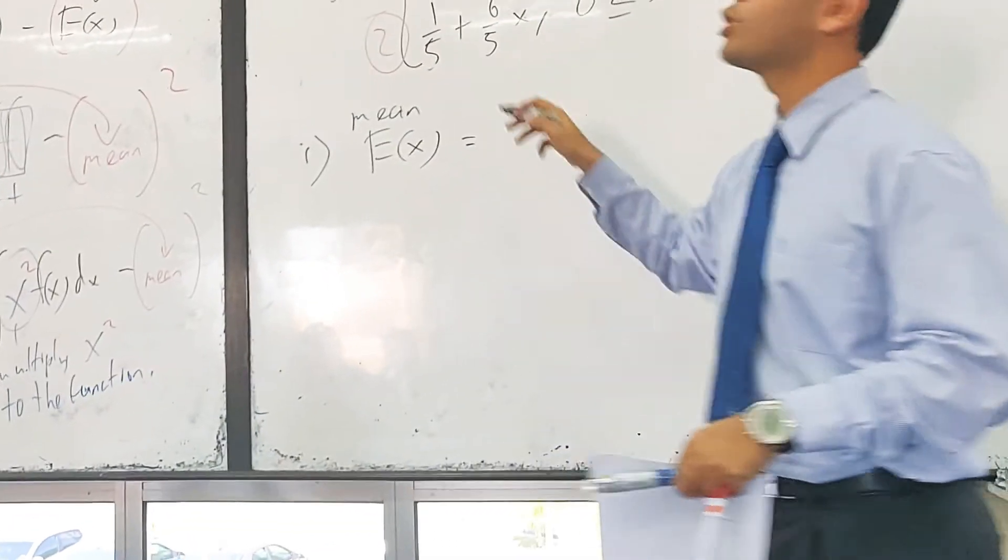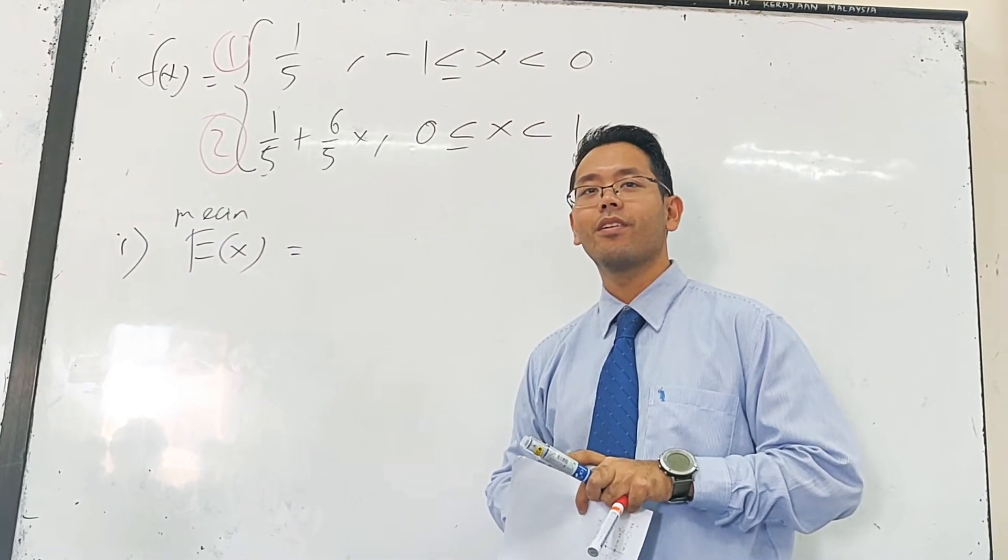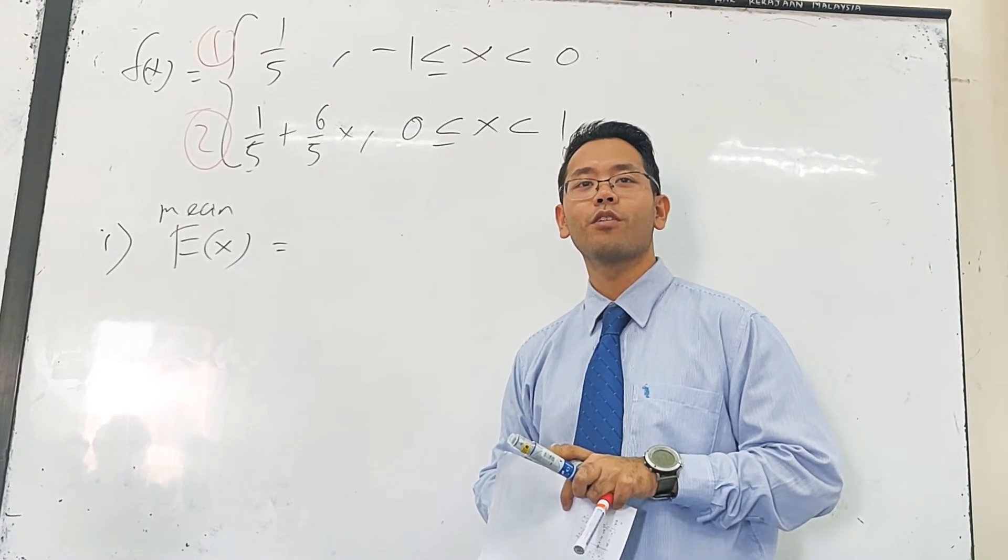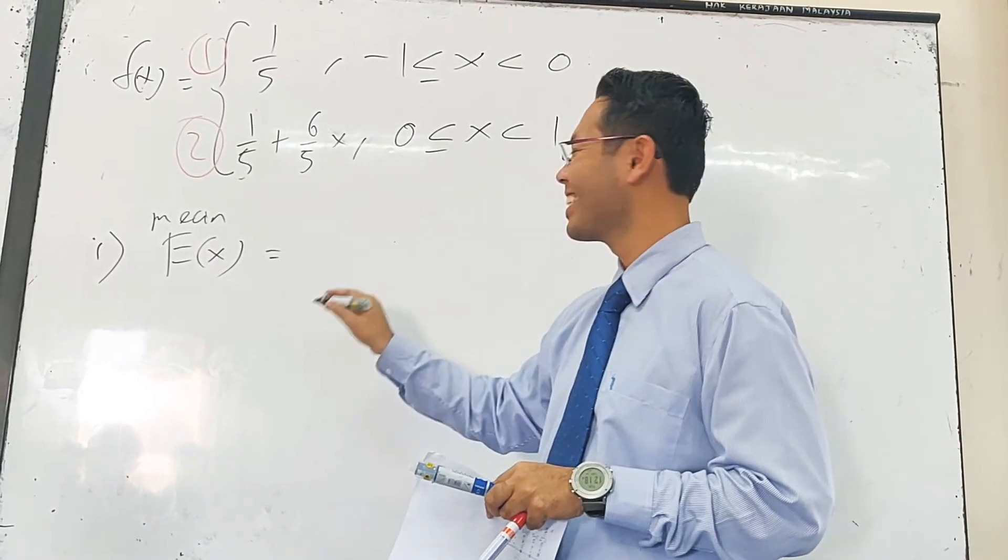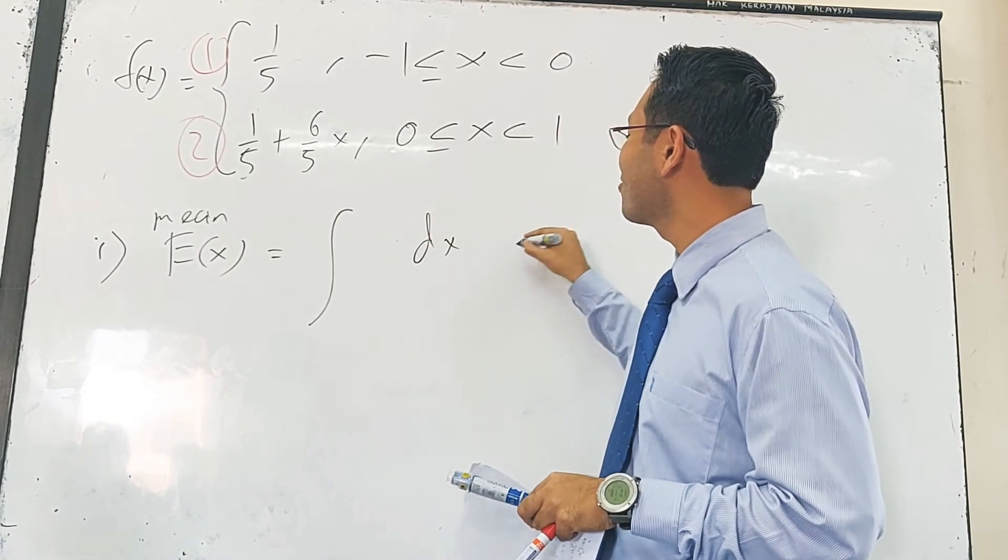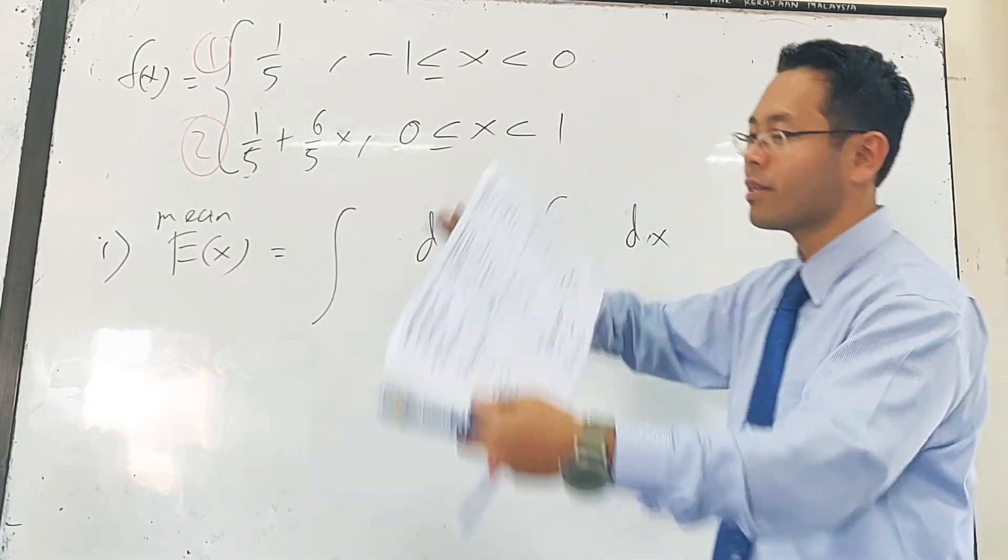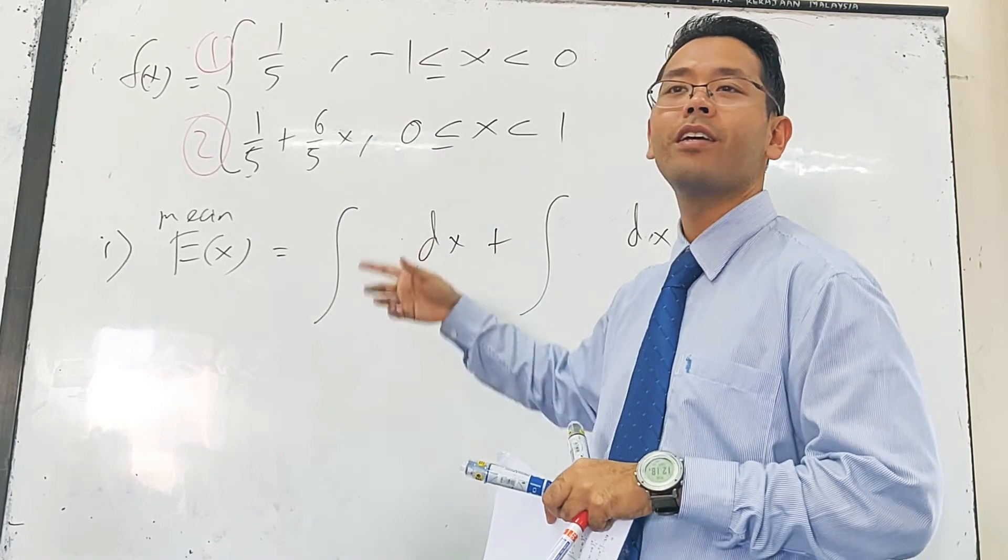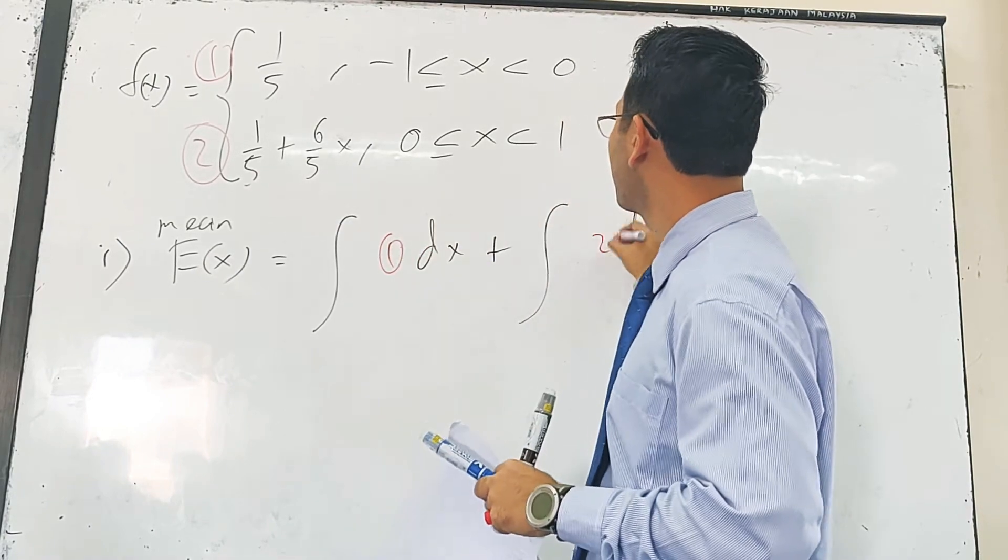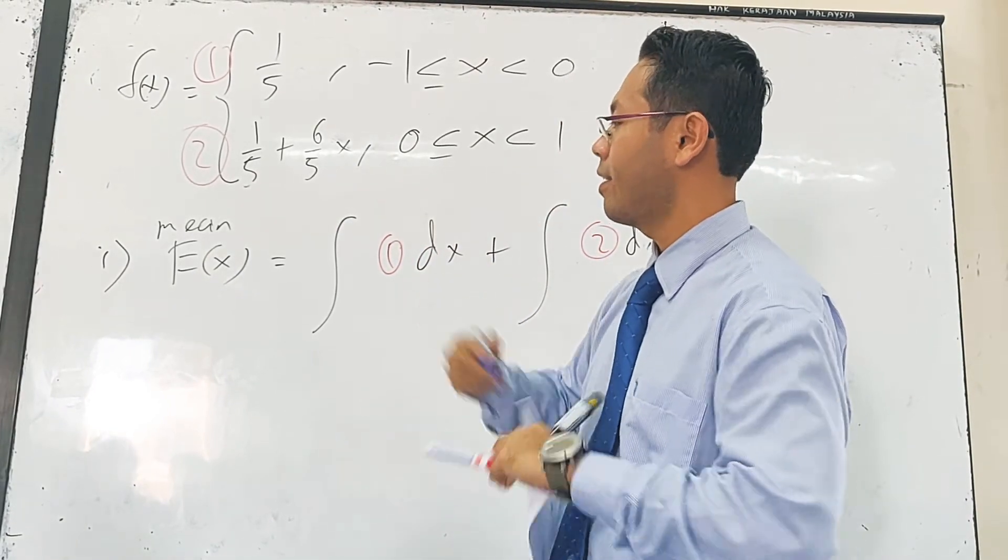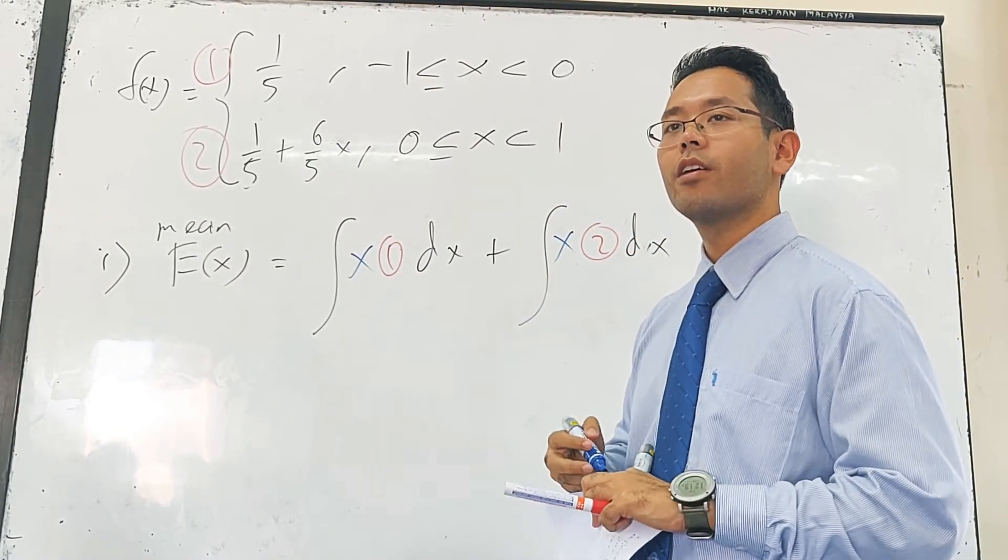But over here I have 2 functions. Which function should I multiply x to? First and second, function 1 or function 2? That's a trick question. The answer is you need to multiply to both functions. So let's say function 1. I mean it's like how you do when it comes to multiple functions. If you want to find equals to 1 you need to integrate and plus both. So for this case, function 1 and function 2, we multiply x to them. Okay, I'll do the first one for you.